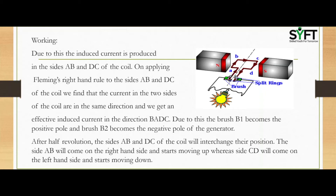On applying Fleming's right hand rule to sides AB and DC of the coil, we find that the current in the two sides flows in the same direction, giving an effective induced current in the direction BADC. Due to this, brush B1 becomes the positive pole and brush B2 becomes the negative pole of the generator.